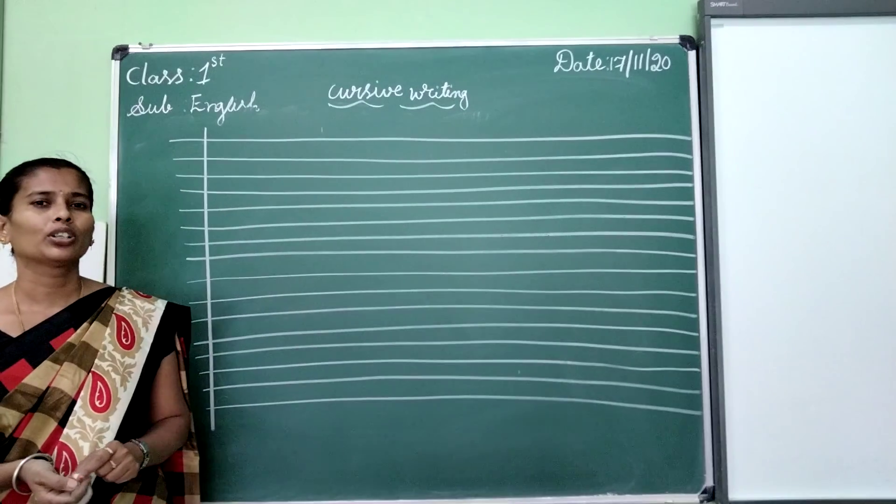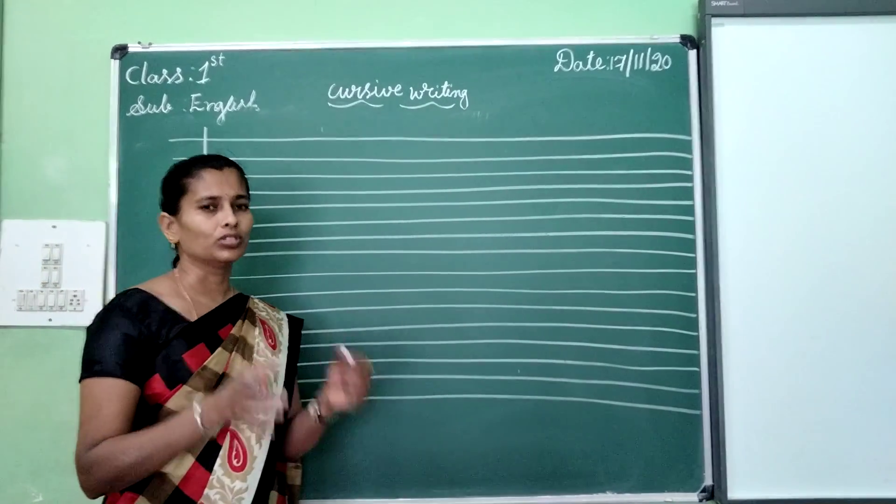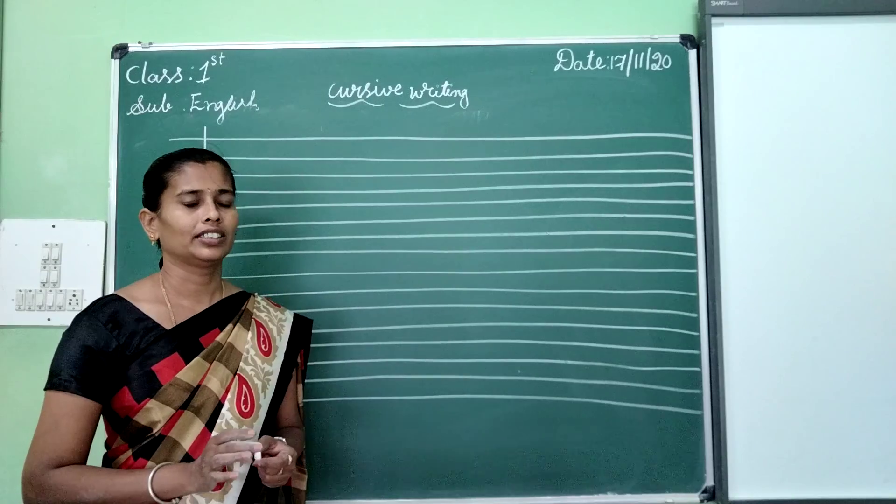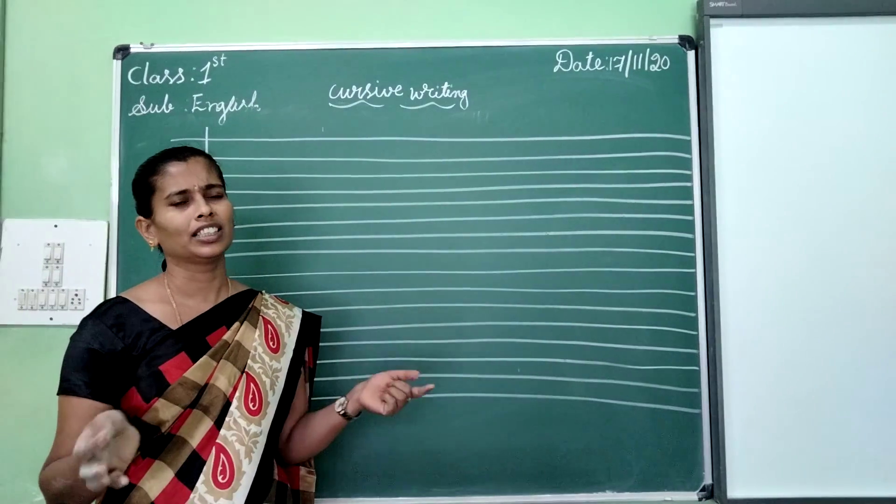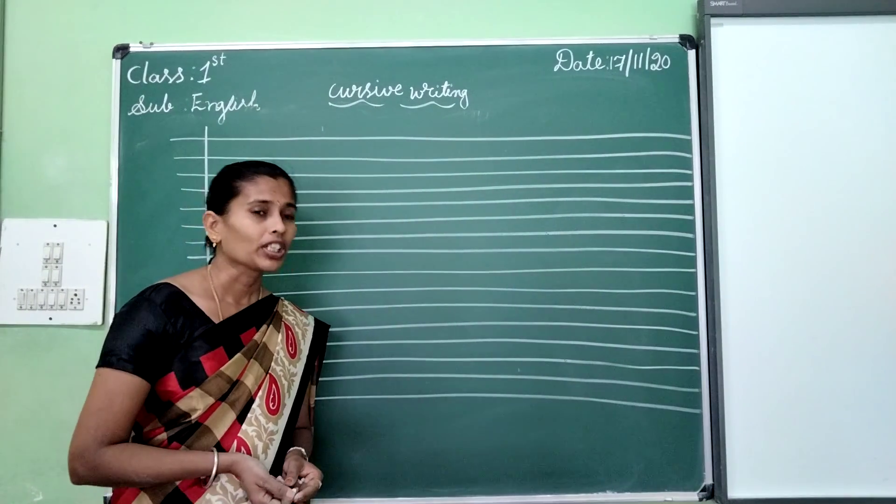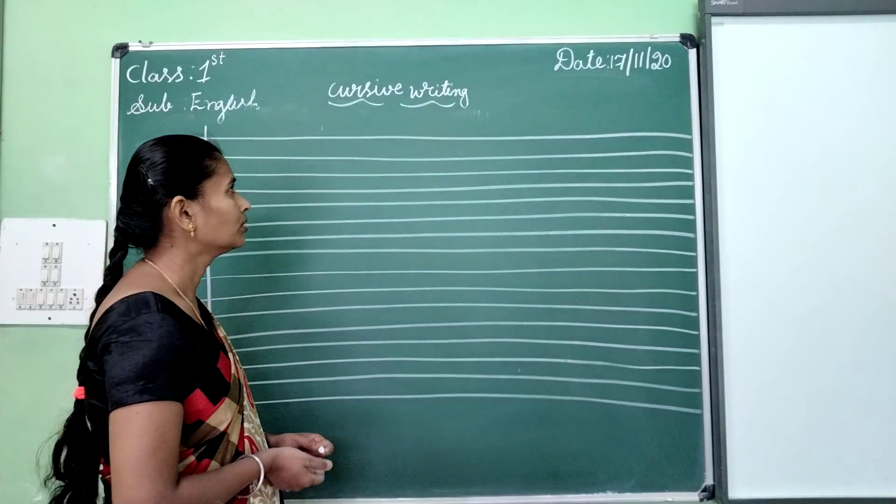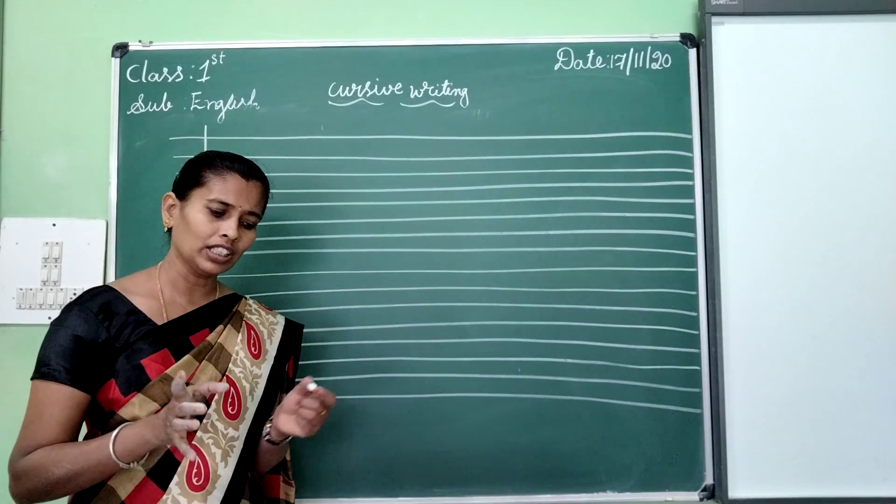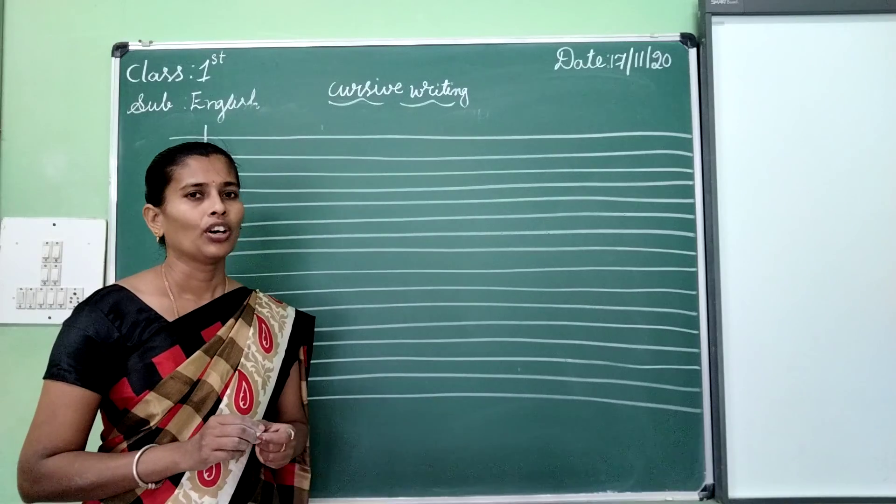Okay children, today we are going to learn some words in your cursive writing. English cursive writing. In your book, page number 14, we are given a total of 8 words.